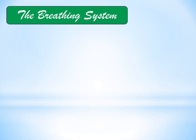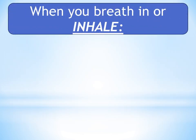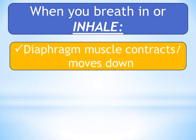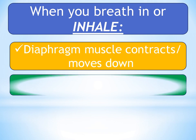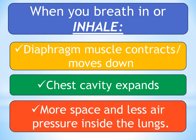How does the human breathing system work? Let us do a breathing exercise at least five times and put your hand at your diaphragm. Take note of what you feel and notice the movement of your diaphragm during inhalation and exhalation. When you breathe in or inhale, the diaphragm muscle contracts. Inhaling moves the diaphragm down and expands the chest cavity. Simultaneously, the ribs move up and increase the size of the chest cavity, creating more space and less air pressure inside the lungs.